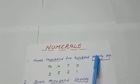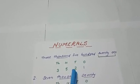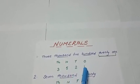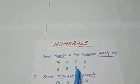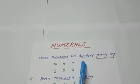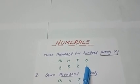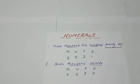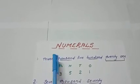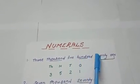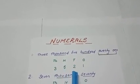Next, 21. 21 means how many tens? 2 tens and 1 one. So under tens I will write 2, and under ones I will write the number 1. So the numeral for the given number name 3521 is 3521.